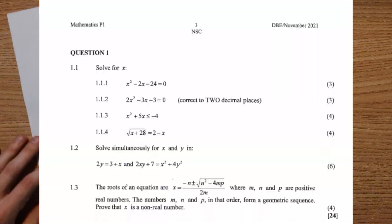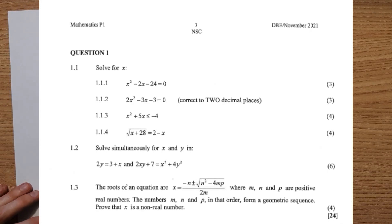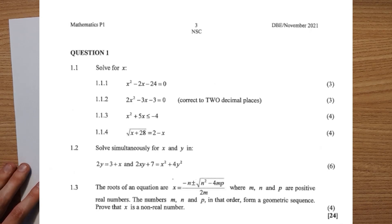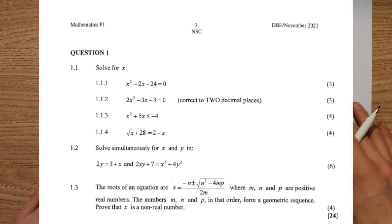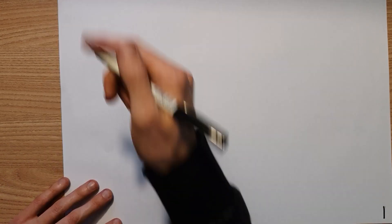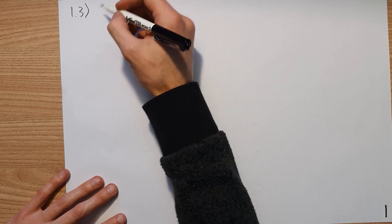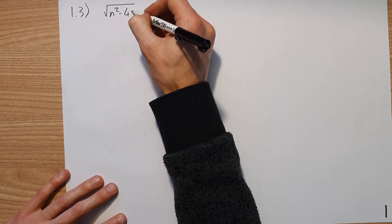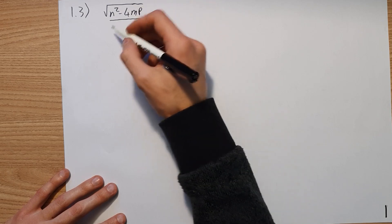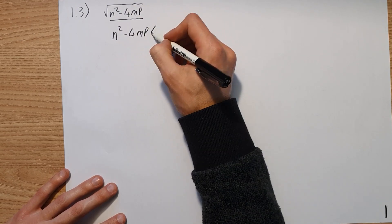Question 1.3 is quite a complicated question. The roots of the equation are given as: x equals negative n plus or minus the square root of n squared minus 4mp, all over 2m, where m, n, and p are positive real numbers. Also, m, n, and p in order form a geometric sequence. We need to prove that x is a non-real number. For x to be non-real, we need to prove that n squared minus 4mp is less than zero, because then we have the square root of a negative number.